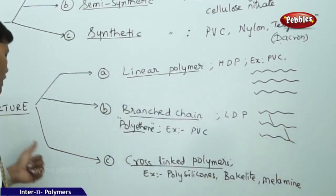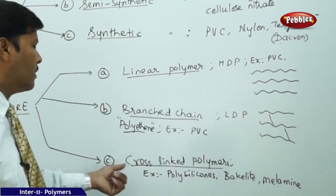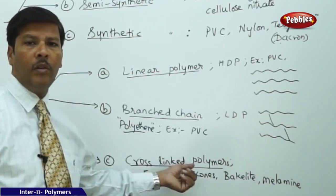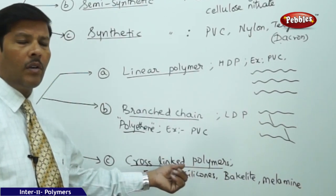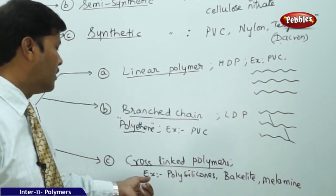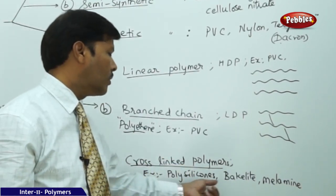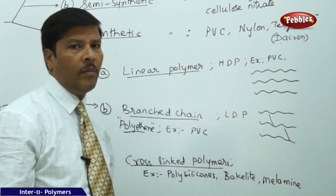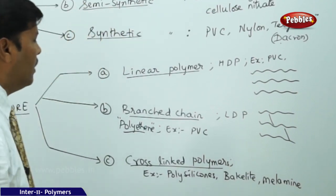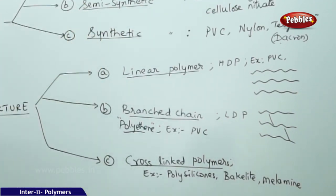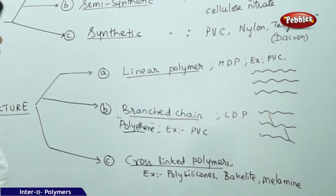The third structural type is cross-linked polymers. Examples of cross-linked polymers include polysilicones, bakelite, and melamine.